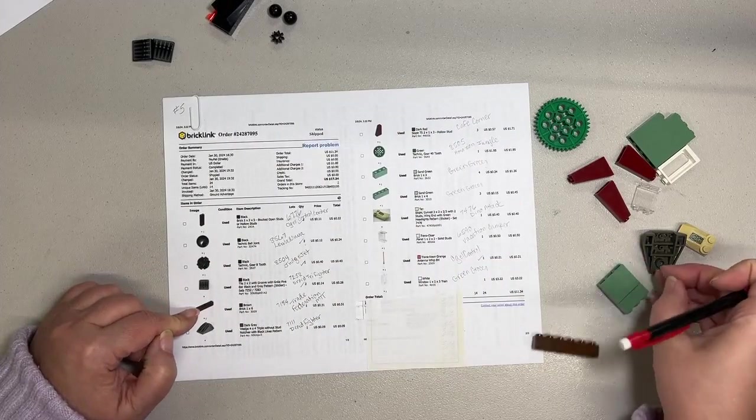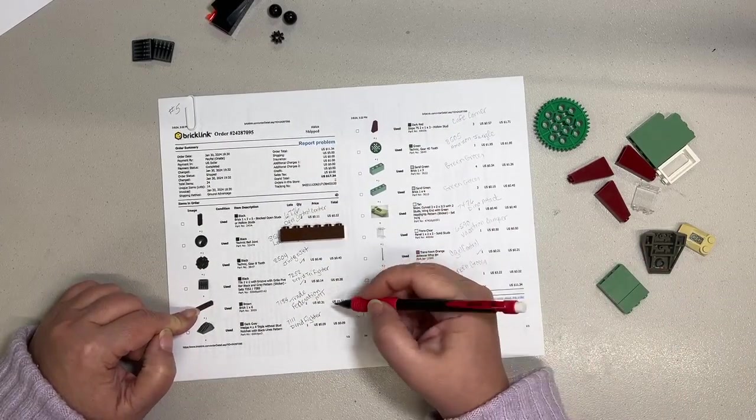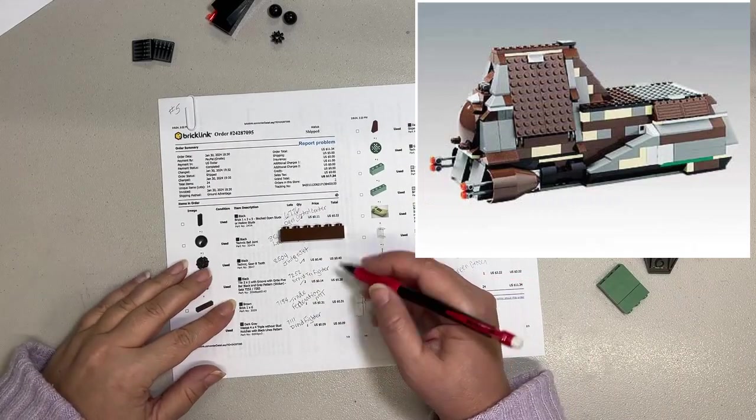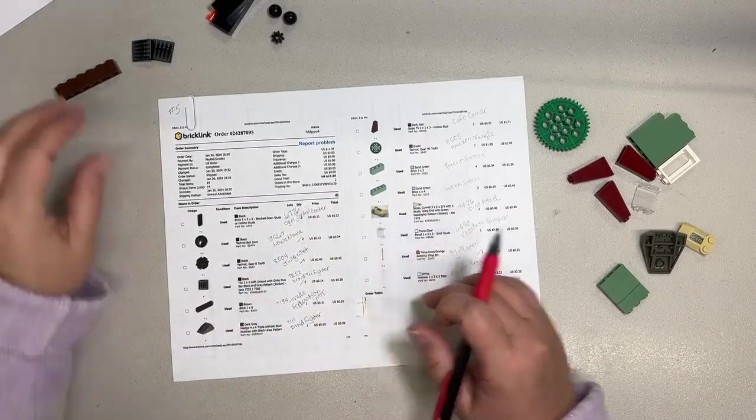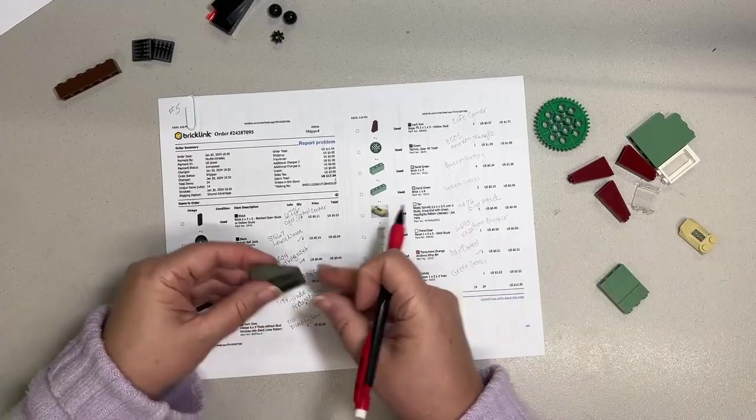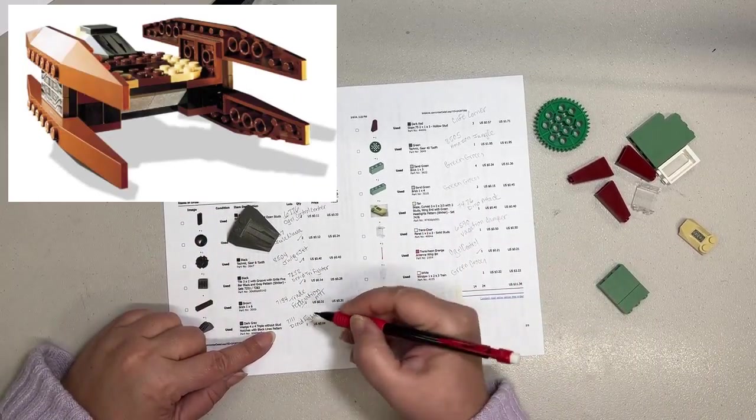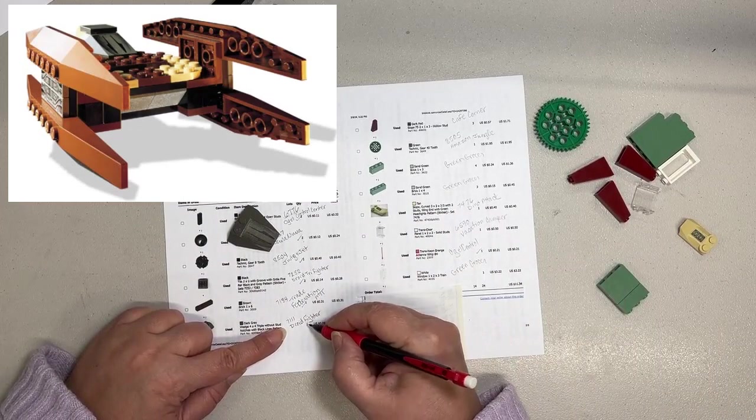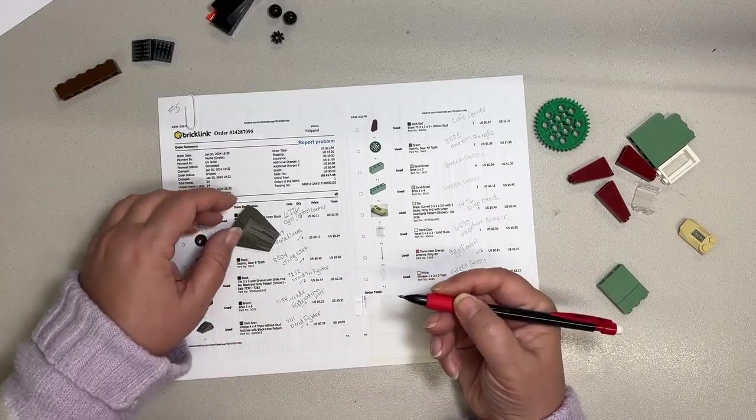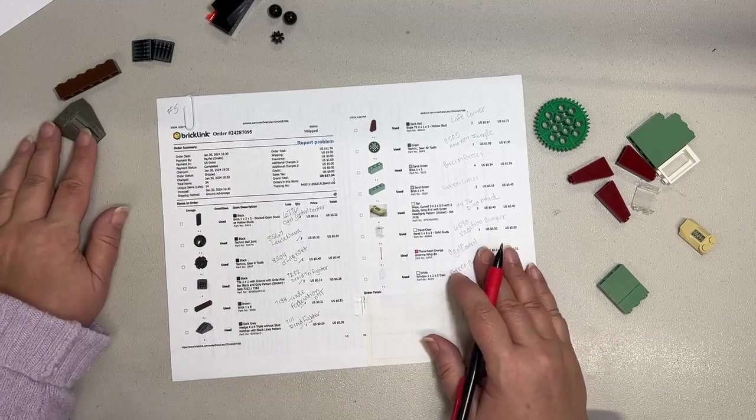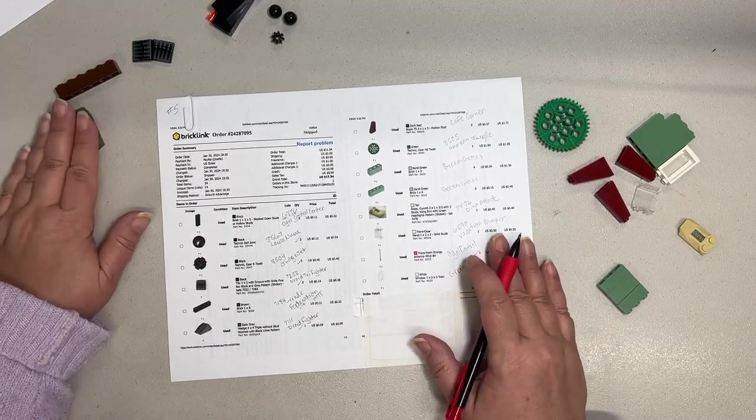The brown brick is for another Star Wars set, the 7184 Trade Federation MTT. I have quite a few parts for Star Wars sets. This is also for a Star Wars set, the 7111 Droid Fighter, and I think I might just need one more for that set and we'll be able to post it on eBay.